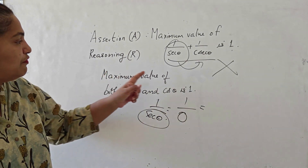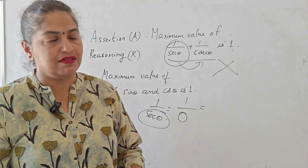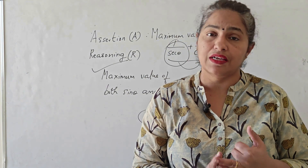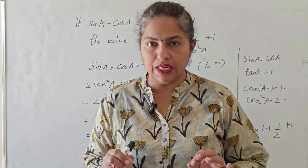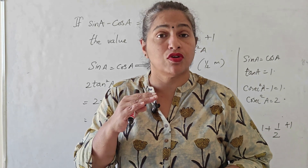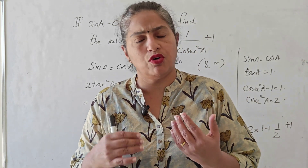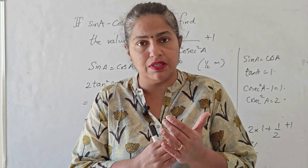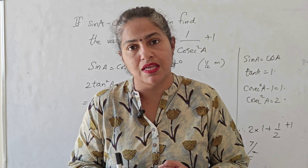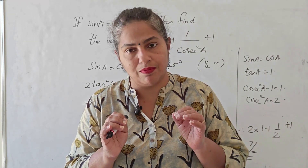Now for the reasoning: the maximum value of both sin θ and cos θ is 1 — we know this is true because in the first quadrant the maximum value is 1 and the minimum is 0. So reasoning R is correct. Therefore A is wrong and R is correct. This is a two-mark question and I have written the mark split for the steps, taken from the CBSE website. I have also written an alternate method — if your logic and steps are correct you will definitely get the marks.